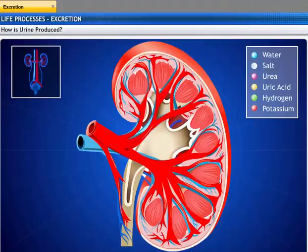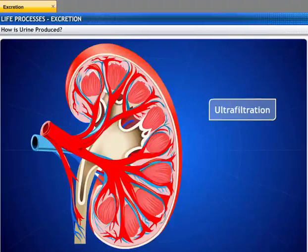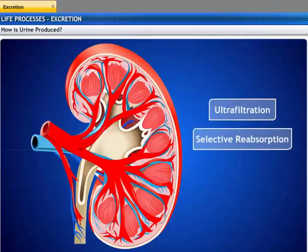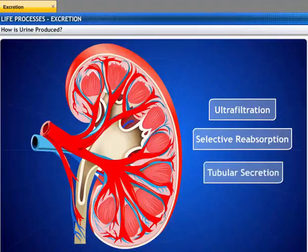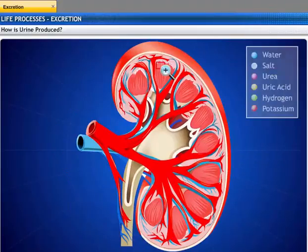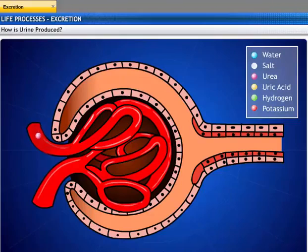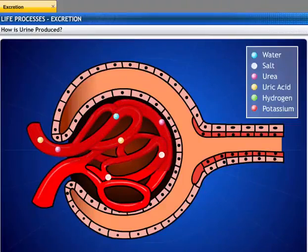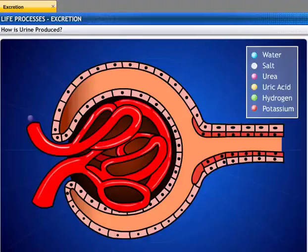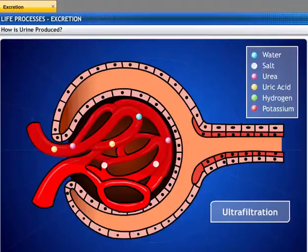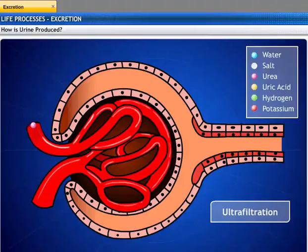The kidney performs three functions leading to urine formation: ultrafiltration, selective reabsorption, and tubular secretion. Nephrons filter minerals, wastes, and water but retain red blood cells, proteins, and large molecules. This process is known as ultrafiltration.